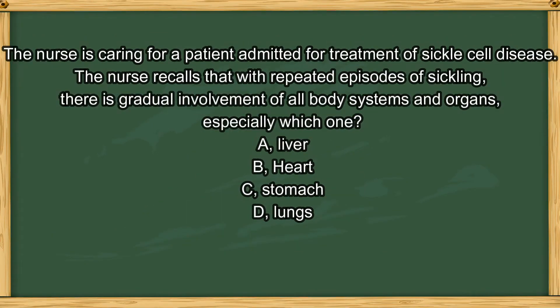Next question. The nurse is caring for a patient admitted for treatment of sickle cell disease. The nurse recalls that with repeat episodes of sickling, there is gradual involvement of all body systems and organs — especially which one? A. Liver. B. Heart. C. Stomach. D. Lungs.